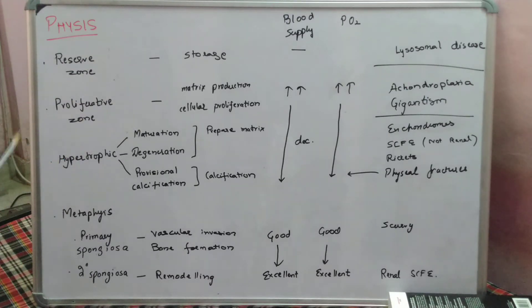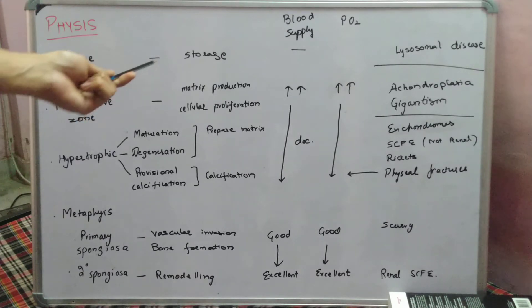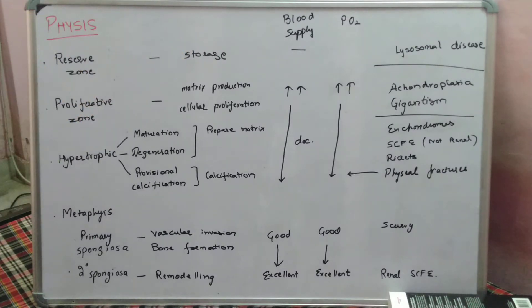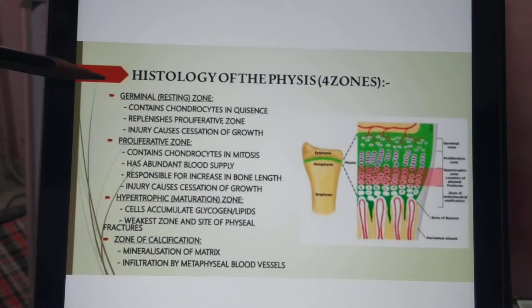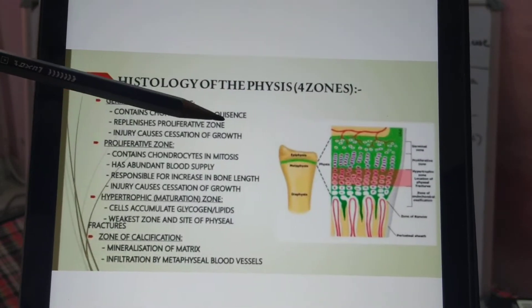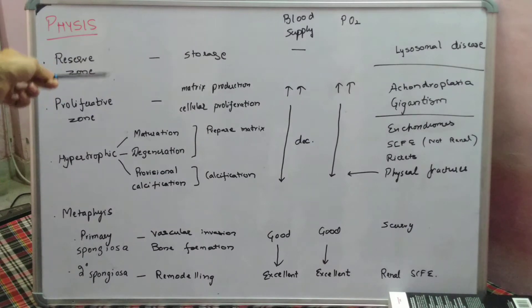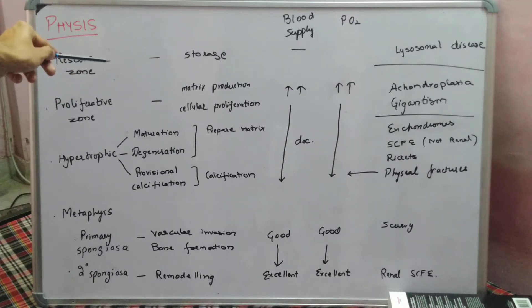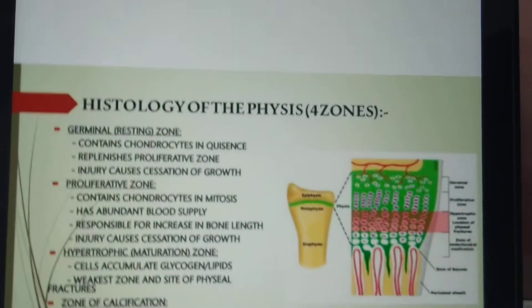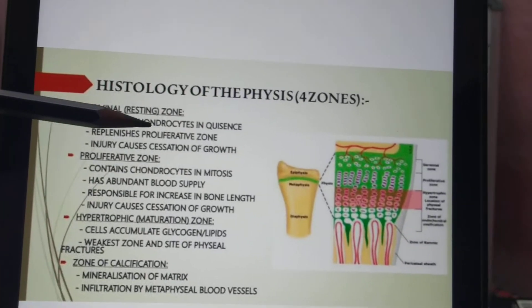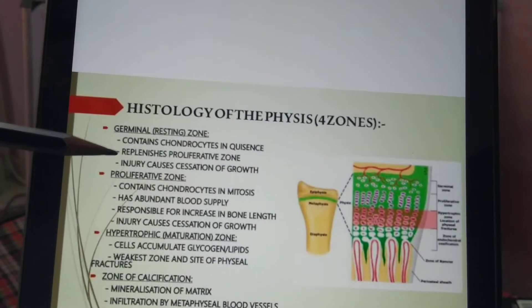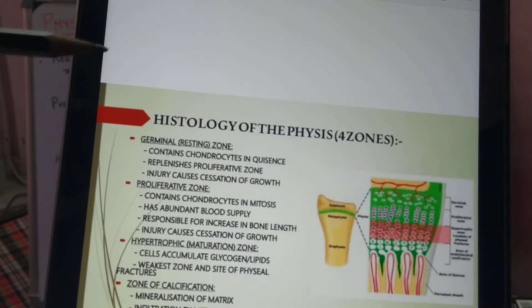Starting with the reserve zone: as the name indicates, it is a storage zone. There is no blood supply, so no growth occurs at this level. The cells store lipids, glycogen, and proteoglycans. This germinal or resting zone contains chondrocytes in a resting phase that supply the proliferative zone. Once chondrocytes proceed to the hypertrophic zone, more chondrocytes from the reserve zone enter the proliferative zone. Injury in this zone causes cessation of growth.